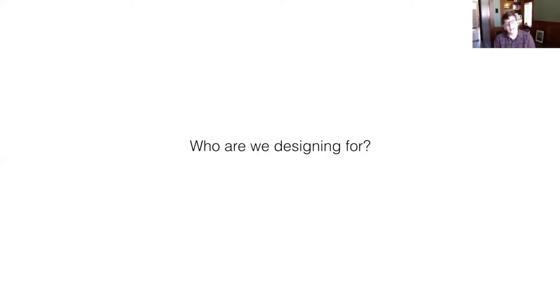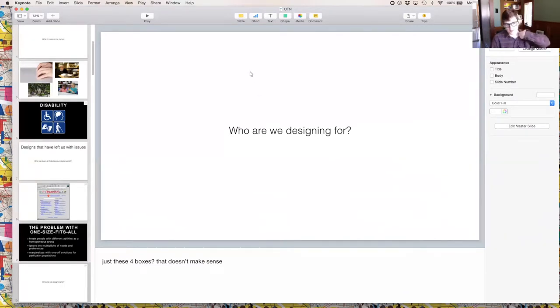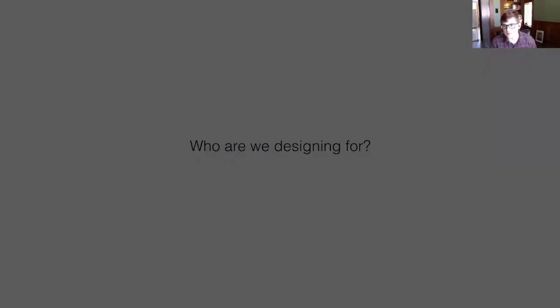If we're just designing for those four boxes, we're sticking to a taxonomy that doesn't make sense. If we're designing for 'the deaf and hard of hearing,' that doesn't make sense — there is a spectrum within deaf and hard of hearing, and there are people with comorbidities and situational deafness. The problem with the one-size-fits-all approach — where most people use the main Yahoo page and a few people need the other version — is that it treats people with different abilities as a homogeneous group. If you stick people into buckets, it's going to fail. You can put people into categories and then you have somebody who fits into two or three categories and your taxonomy fails.